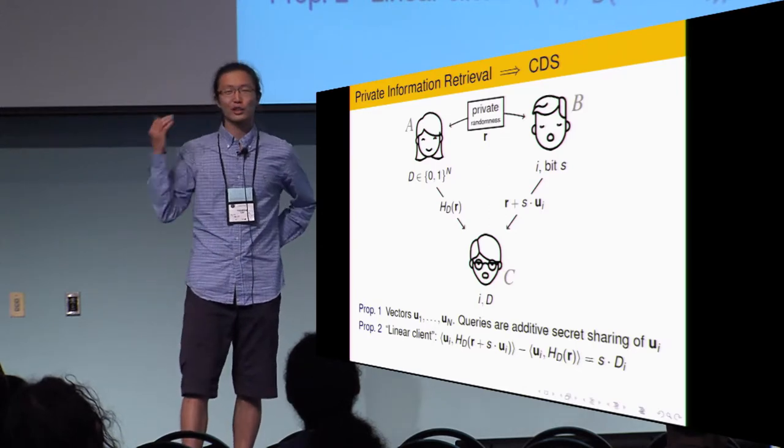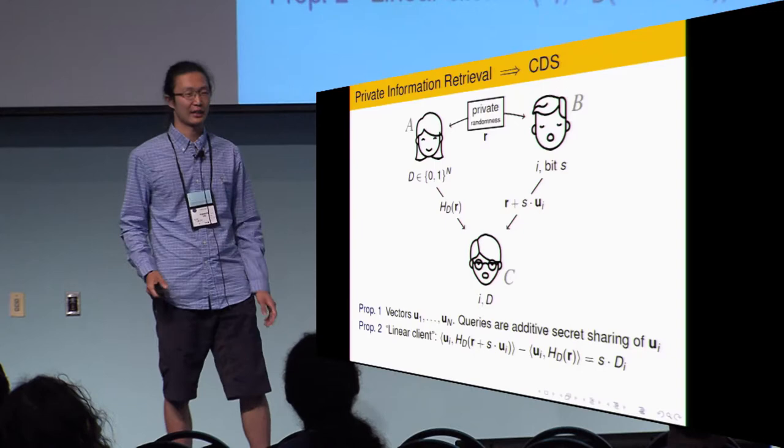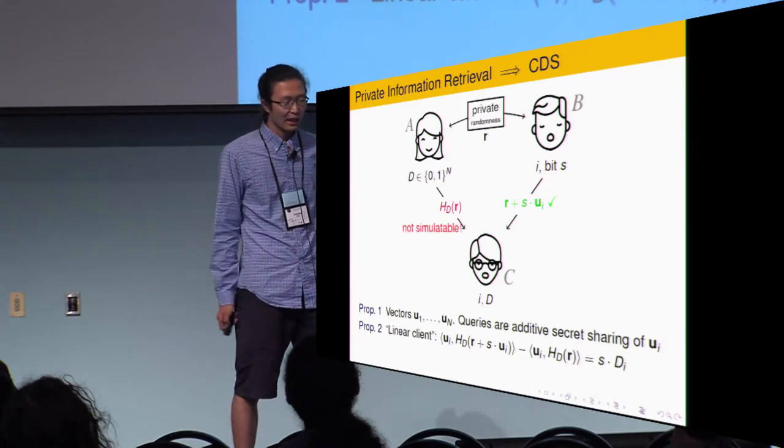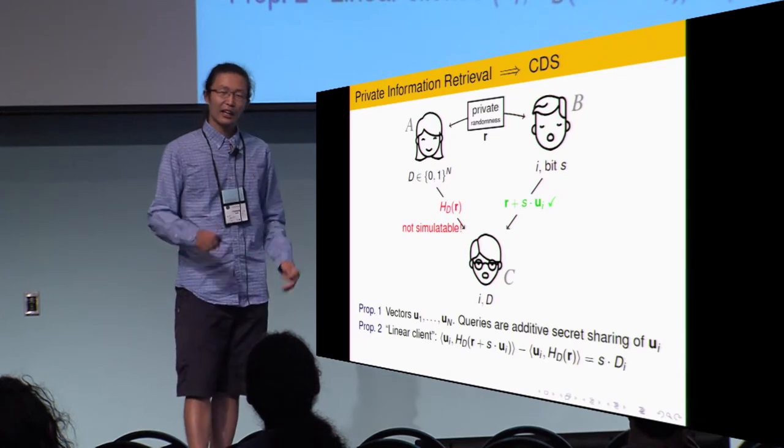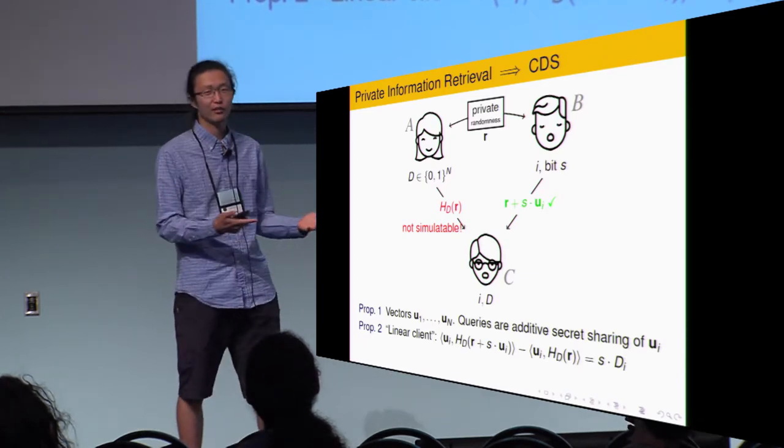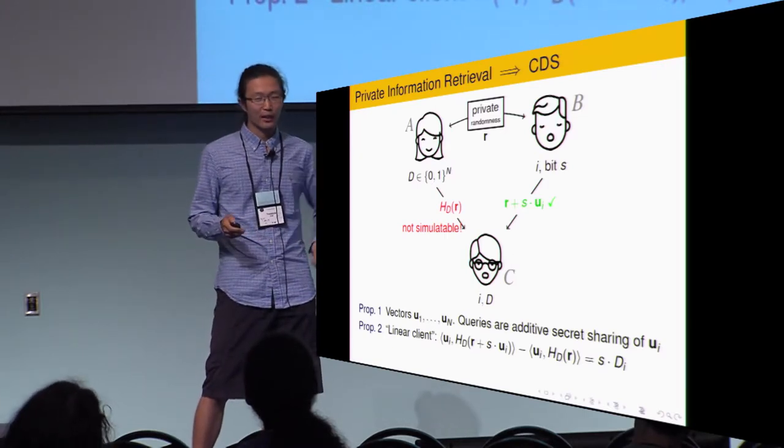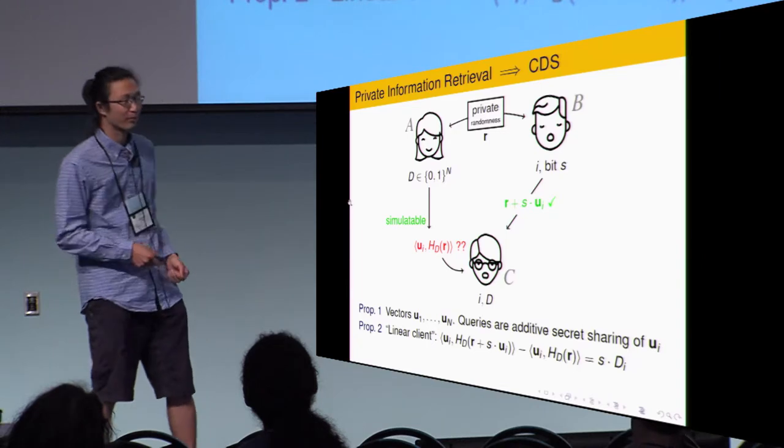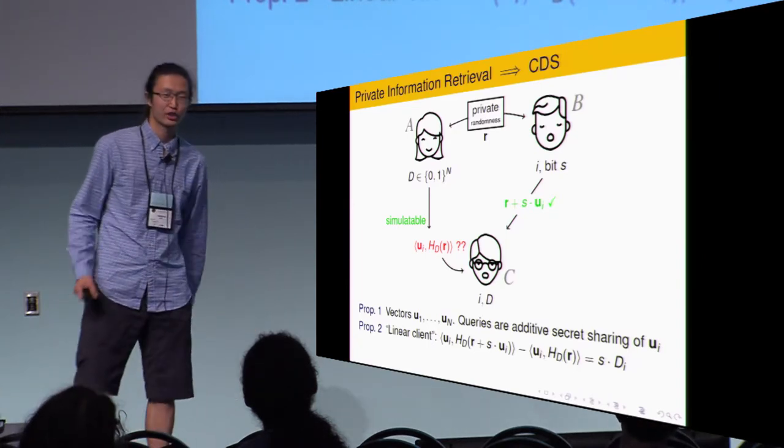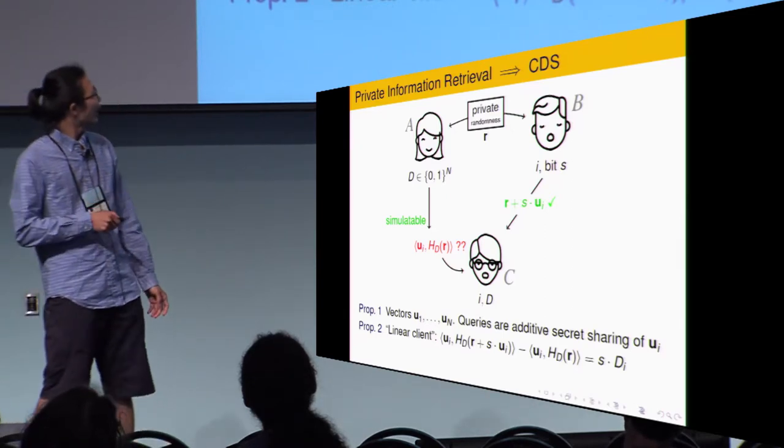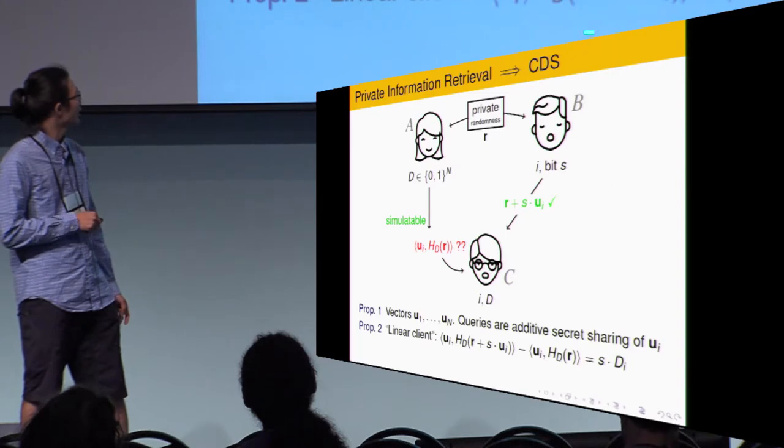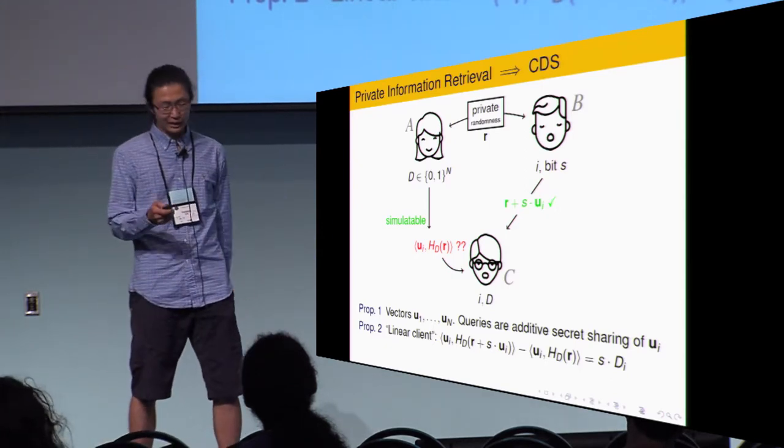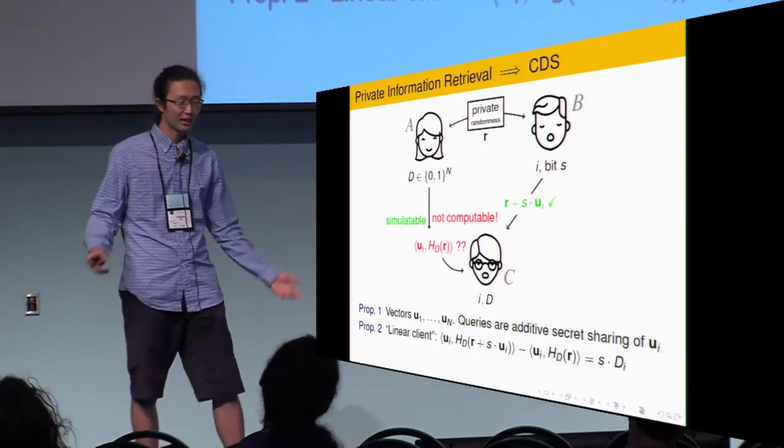Is it private? Assume you are the simulator. You want to simulate Charlie's view without knowing secret S. Bob's message, cool. It's simulatable. It's just a random string. But you don't know how to simulate Alice's one. Actually, Alice's message alone, you can simulate it because it doesn't even contain S. But the joint distribution is hard. But now let's have a daydream. Alice's message is used to compute this inner product. What if Alice just sent this inner product? It's just one bit. And actually, when d_i equals zero, from this equation, you can compute what Alice is going to send. So, this is actually simulatable.